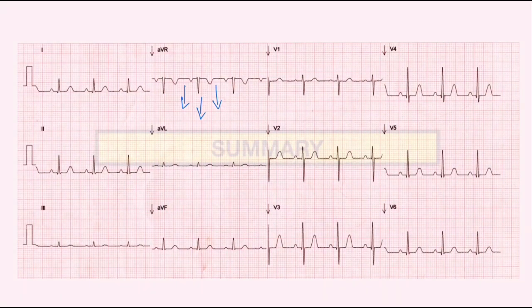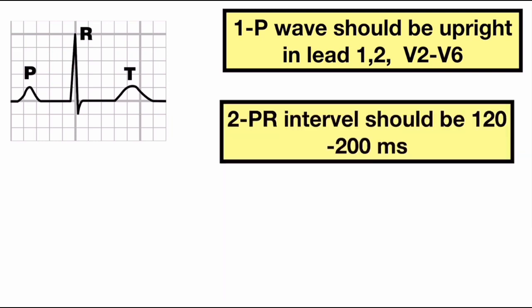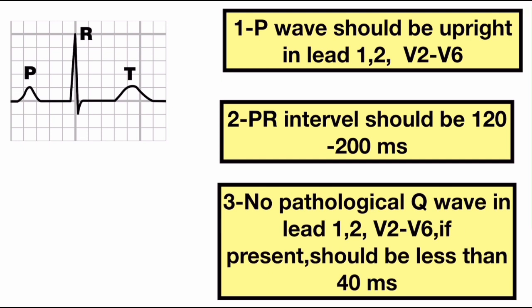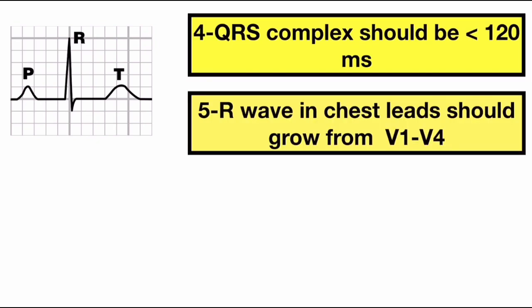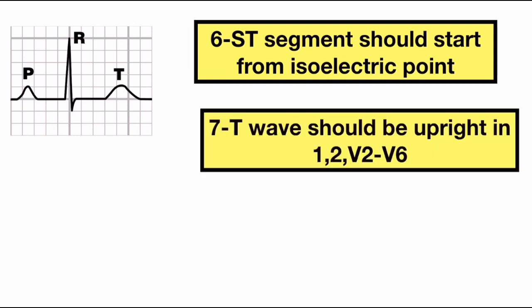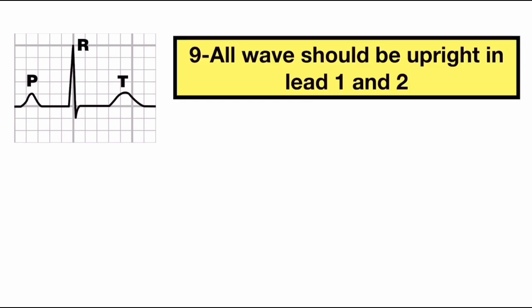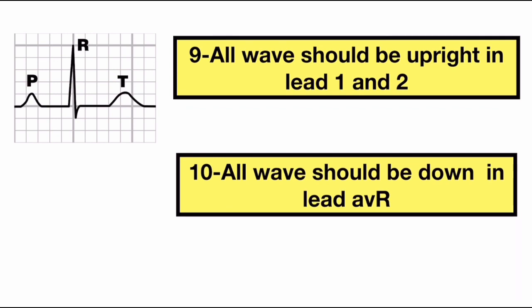These are the 10 rules of Chamberlain for a normal ECG. In summary: P waves should be upright in leads 1, 2, and V2 to V6. PR interval should be 120 to 200 ms. There should be no pathological Q wave in leads 1, 2, and V2 to V6; if present, it should be less than 40 ms. The QRS complex should be less than 120 ms. R wave in chest leads should grow from V1 to V4. S wave should grow from V1 to V3 and disappear in V6. ST segment should start from the isoelectric point. T wave should be upright in leads 1, 2, and V2 to V6. QRS complex and T wave should be concordant in limb leads. All waves should be upright in leads 1 and 2. All waves should be down in lead AVR. So next time when you read an ECG, you can say that the ECG is normal with confidence.